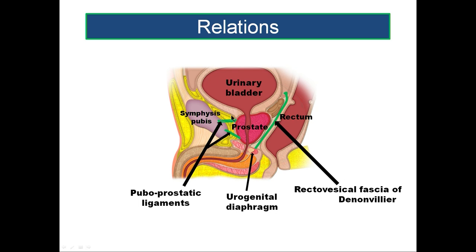It is separated from the pubis by a space called the retropubic space of Retzius. In this space you find two ligaments attached to the prostate posteriorly and to the symphysis pubis and lateral part anteriorly. The upper one is the lateral puboprostatic ligament and the lower one is the medial puboprostatic ligament. The lateral puboprostatic ligament is attached to the base of the prostate, whereas the medial puboprostatic ligament is attached to the neck of the prostate, connecting the prostate anteriorly to the pubis.